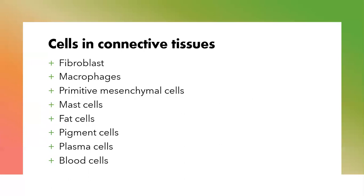Now let's talk about some of the cells that you find in the connective tissue. The cells found in connective tissue include the fibroblasts, macrophages, primitive mesenchymal cells, mast cells, fat cells, pigment cells, plasma cells, and blood cells. Let's delve a little bit into the details of each of these.